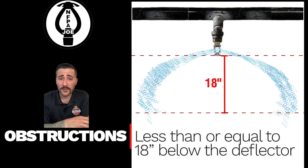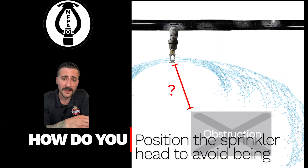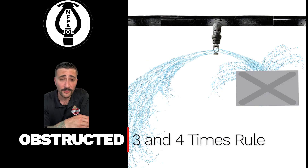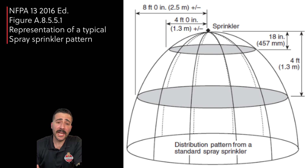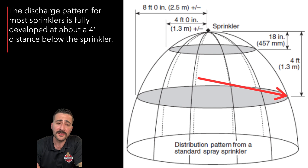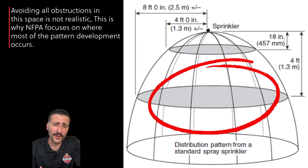Obstructions less than or equal to 18 inches below the sprinkler deflector — how do you position the sprinkler head to avoid being obstructed? You need to learn the three and the four times rule. This is NFPA 13's representation of a typical spray sprinkler pattern. The discharge pattern for most sprinklers is fully developed at about a four-foot distance below the sprinkler. Avoiding all obstructions in this space is not realistic.